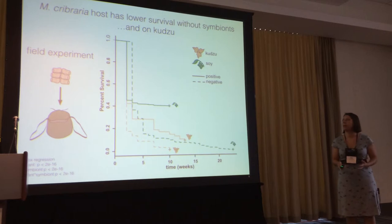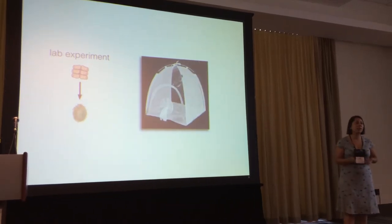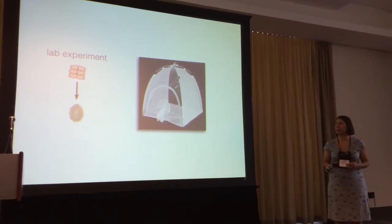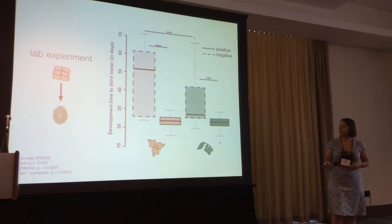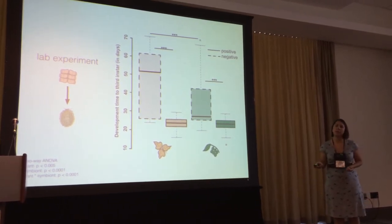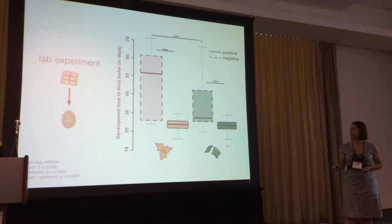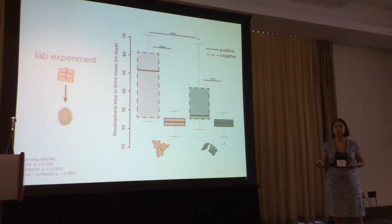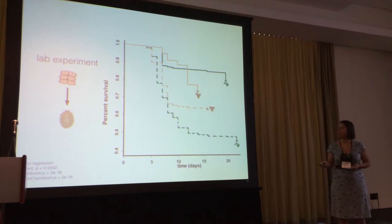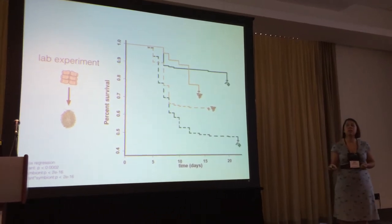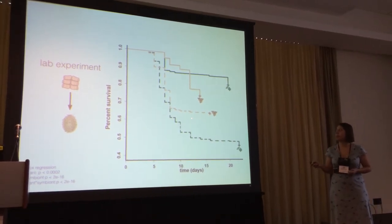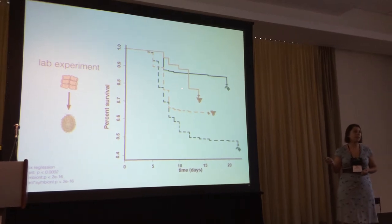A lot of what was happening in survival occurred in the earlier time periods, so we wanted to focus on that and brought the experiment into the lab for more control. We focused on early developmental stages from hatch to third instar. In that time period, symbiont absent treatments had much longer development time, very consistent with the field. Overall, host plant was important, but in the symbiont positive treatments there wasn't a real difference in development time between host plants. For survival, symbiont absent treatments again had much lower survival, and we saw a different story in the symbiont positive treatments.